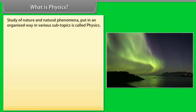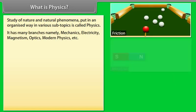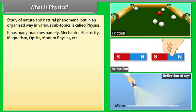What is physics? Study of nature and natural phenomena put in an organized way in various subtopics is called physics. It has many branches, namely mechanics, electricity, magnetism, optics, modern physics, etc. Physics before 1900 is called classical physics and physics beyond 1900 is called modern physics.